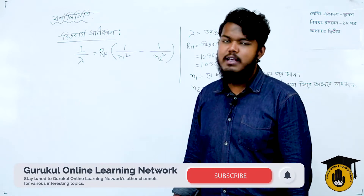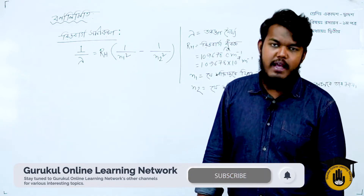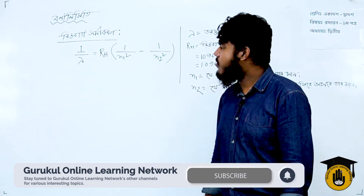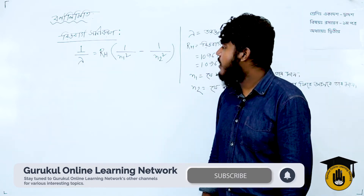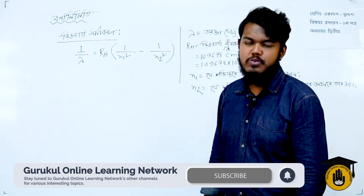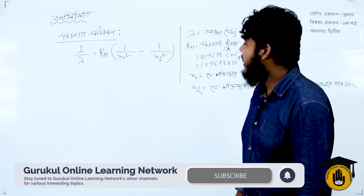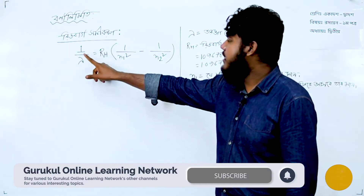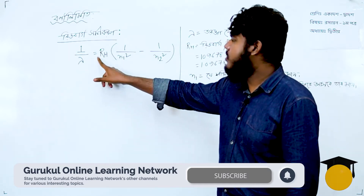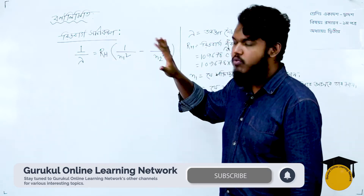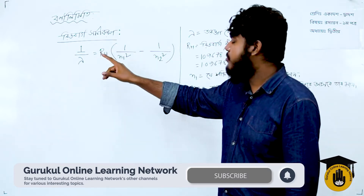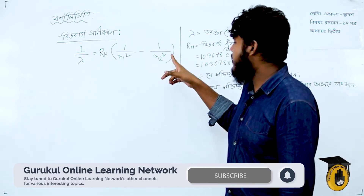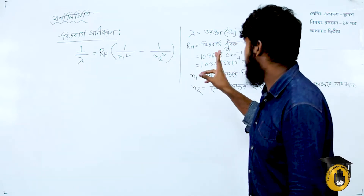The Rydberg formula is: 1 divided by lambda is equal to RH into 1 divided by n1 squared minus 1 divided by n2 squared. Step 2: 1 divided by lambda is equal to RH into 1 divided by n1 squared minus 1 divided by n2 squared.